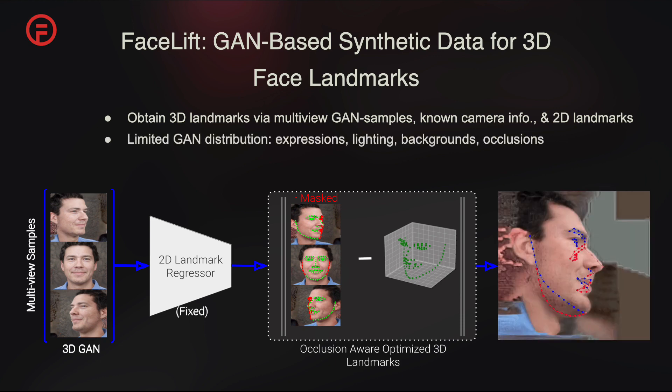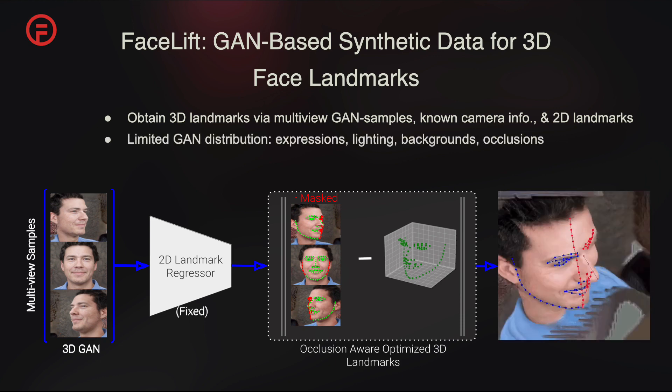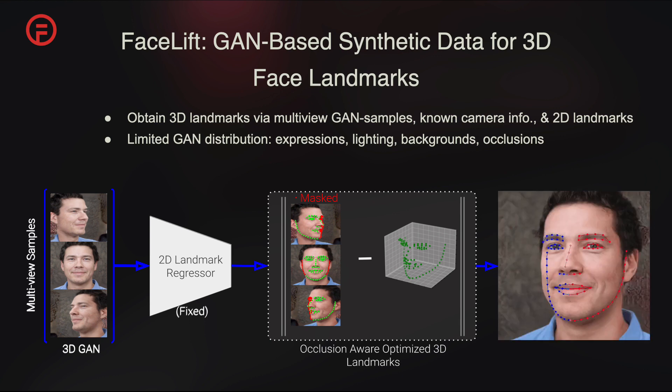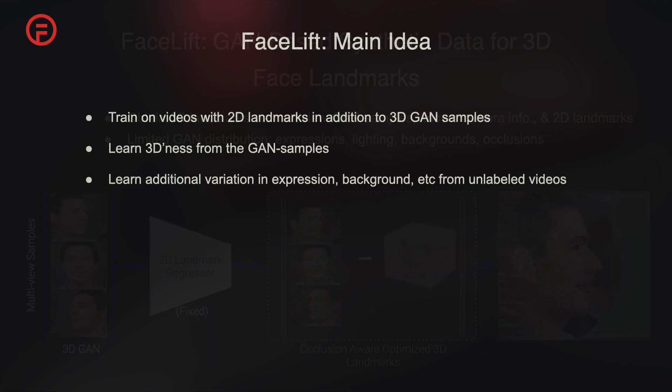However, training on this data alone yields suboptimal results, due to the GAN's limitedness in expression, lighting, and occlusion variations. Thus, we propose to train jointly on 2D unlabeled videos alongside the GAN data, where the 3D-ness is learned from the GAN samples, while additional variation in expression, background, occlusion, etc., is gleaned from the videos.